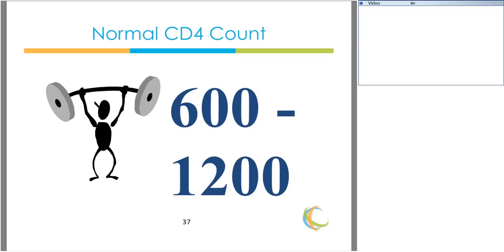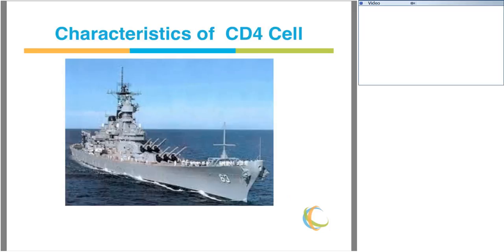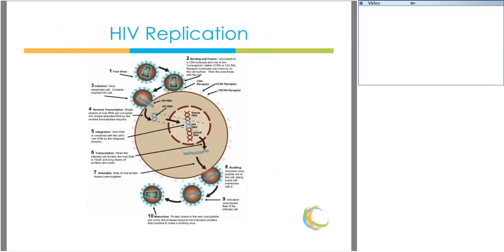I like to think of a CD4 cell as a battleship — it has a protection function in the body as an immune system cell, responsible for helping mount a defense against foreign invaders. Like a battleship, it has a lot of different working machinery inside. The virus takes over the CD4 cell through a series of steps, using the cell's own machinery to make more copies of itself — essentially using the battleship's own machinery to make more robots.